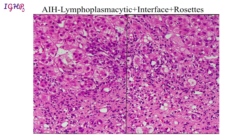In autoimmune hepatitis we see a mixture of lymphocytes and plasma cells with occasional eosinophils within the portal tract. These lymphoplasmacytic infiltrates reach the limiting plate and start damaging the hepatocytes present at the interface. This is called interface hepatitis, also known as piecemeal necrosis.